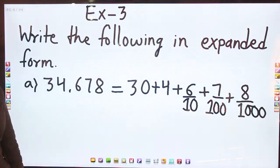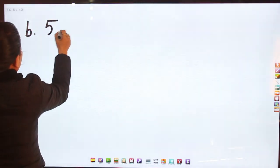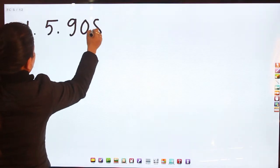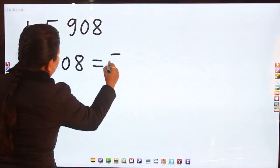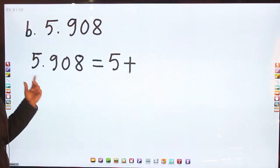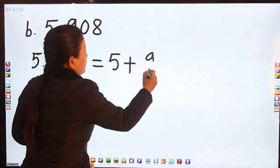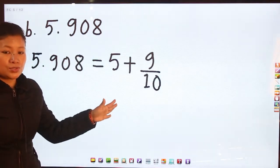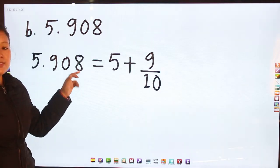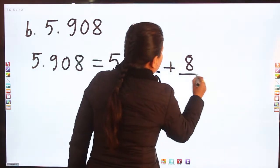Let's do one more question, that is question b: 5.908. Five is the whole number, so five plus. After decimal we have 9, 0, 8. Nine is in the tenths place, so nine by ten. There is zero — no need to show for zero. Eight is in the thousandths place, so eight by thousand.